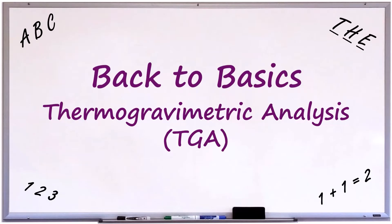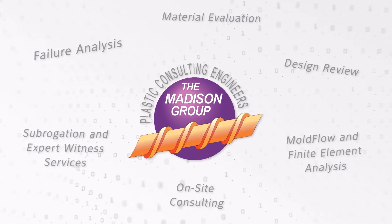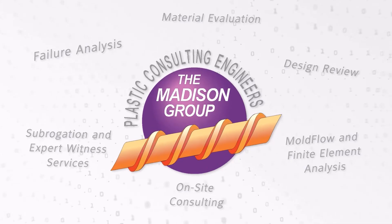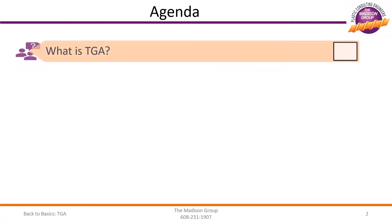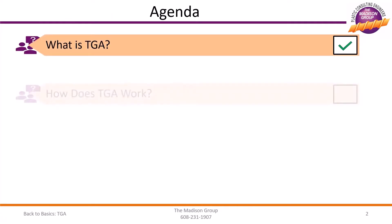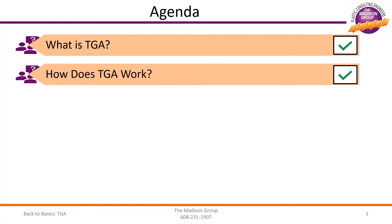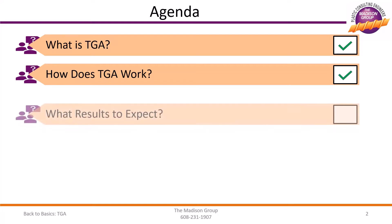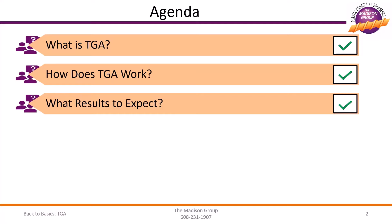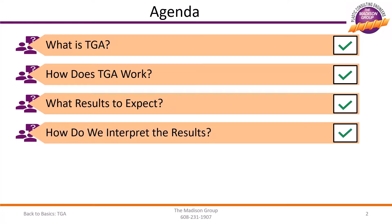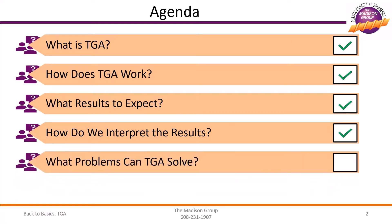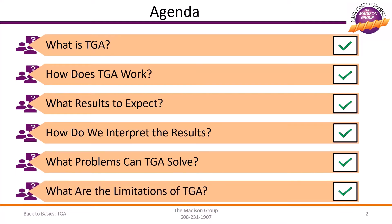We are the Madison Group, and we are your polymer experts. In this video, we will be covering what a TGA is and the very basics of how the equipment functions. We will cover what results to expect from the analysis, how the results should be analyzed, the key data points to examine, a few key applications of TGA, as well as some of the limitations of this particular test and equipment.